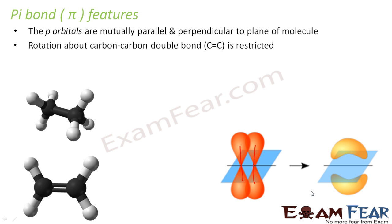The second feature is that the rotation of the carbon-carbon bond is restricted. For example, in ethane there is no double bond, so it can rotate. But in the case of a double bond, the rotation is restricted — it can't rotate.